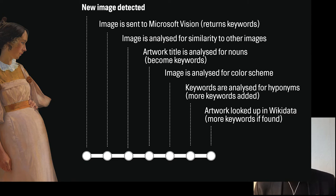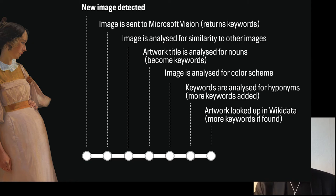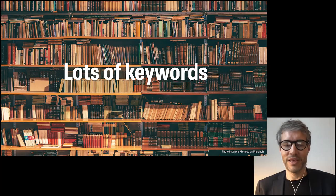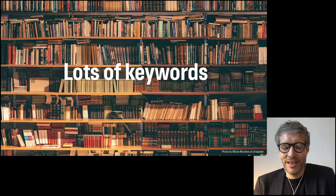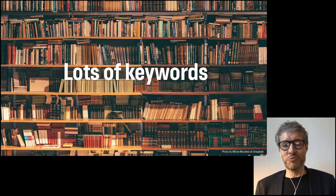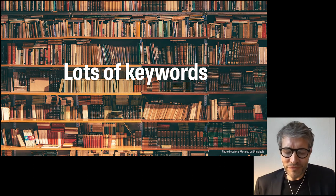Here's what happens when our friendly museum photographers add a new photo to the system. A number of processes start up automatically, enriching the information in our database. And it works — we actually do get lots of keywords. And there are a thousand footnotes here, but as a general principle, the more keywords the better. And so, everything is solved, and our job is done.